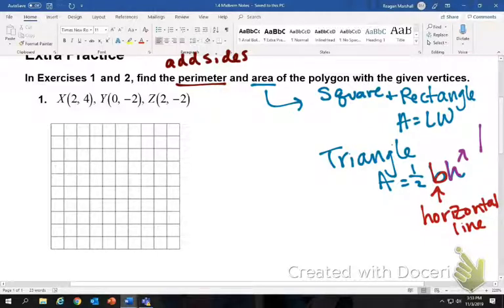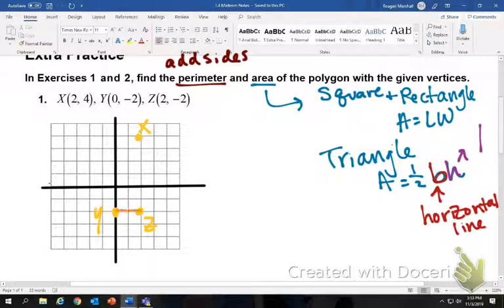Let's go ahead and graph these points. In order to do that, we need an x and y axis. Go ahead and graph the points. So we'll start with x, which is over 2, up 4. 0, negative 2, which is y, and then 2, negative 2, which is z. Then you'll want to connect the dots. You can definitely tell what kind of shape this is, there's only 3 vertices, so this is a triangle.